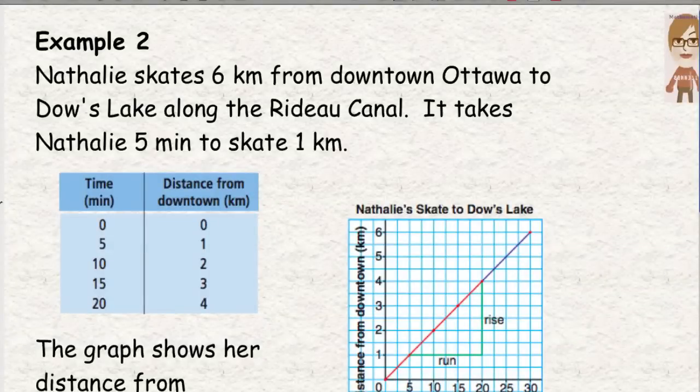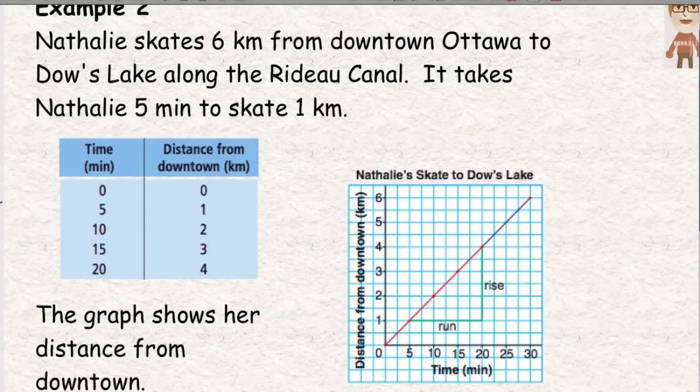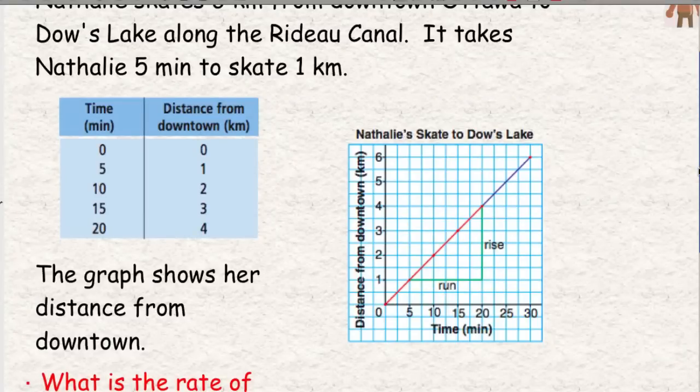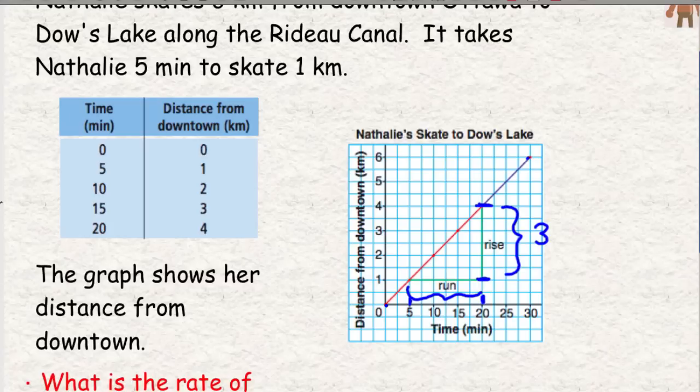Example 2 is about Natalie. Natalie skates 6 kilometers from downtown Ottawa to Dow's Lake along the Rideau Canal. It takes Natalie 5 minutes to skate 1 kilometer. So, we already know that she's going 1 kilometer every 5 minutes. What I want to know is what is her speed. So, the graph shows her distance from downtown. It starts at 0 and goes up from there. And I want to know what the rise over the run is. So, we could have picked other points. It doesn't matter which points you pick. Points closer together might be easier. Points further apart, there's a little bit more calculation. But vertically, from 4 down to 1, that's a change. 4 minus 1, that's a jump of 3. And from 5 to 20, it's like, how long is that? From 5 up to 20, that's 15 units across.